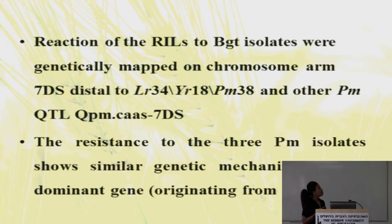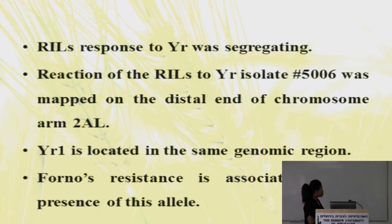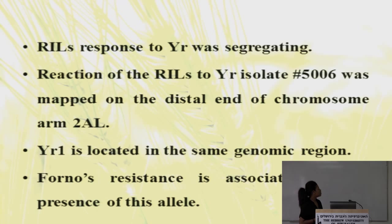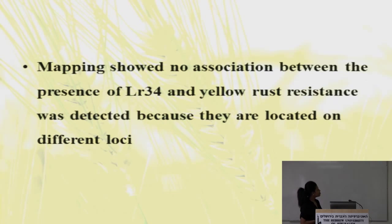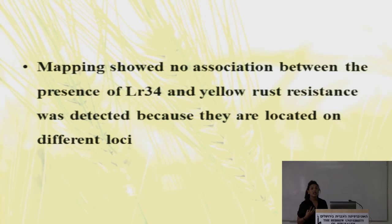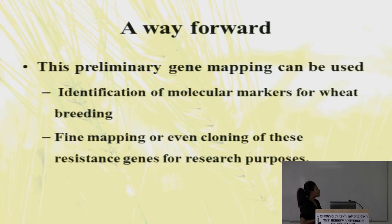Genetic mapping revealed the three powdery mildew isolate resistance genes on chromosome 7D distal, which is also the location of the durable resistance genes LR34, YR18, and PM38. The yellow rust reaction also segregated, and the Chi-square test showed a 1:1 ratio — consistent with single dominant gene control. Mapping of isolate PCAC5-006 placed it on the long arm of chromosome 2A, the location of a previously identified gene from 2009.